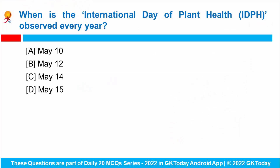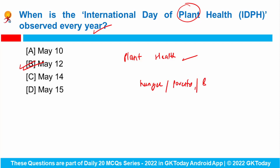When is the International Day of Plant Health observed every year? The United Nations has designated 12th of May as the International Day of Plant Health to raise global awareness on protecting plant health. As per the United Nations, protecting plant health can help in ending hunger, reducing poverty, protecting biodiversity and our environment, and boosting economic development. Plants make up 80% of the food we eat and 98% of the oxygen we breathe, and up to 40% of food crops are lost due to plant pests and diseases every year.